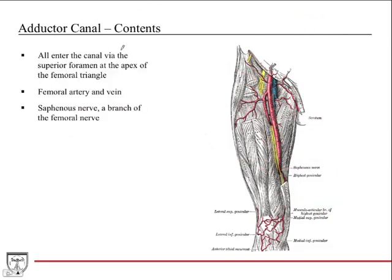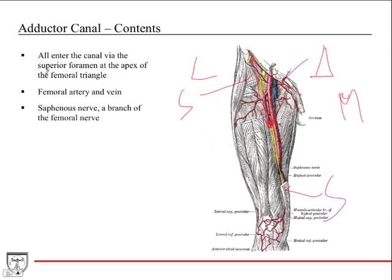The contents of the adductor canal all enter via the superior foramen at the apex of the femoral triangle. The femoral artery and femoral vein travel through the canal — the profunda does not travel through it; it goes deep into the thigh. The superficial femoral artery travels within the canal with the femoral vein, with blood traveling in opposite directions, like cars going two different ways on a road. The saphenous nerve — a branch of the femoral nerve — also travels through the canal.